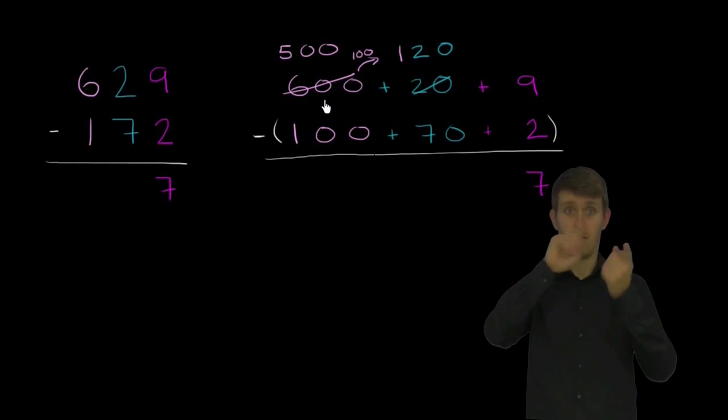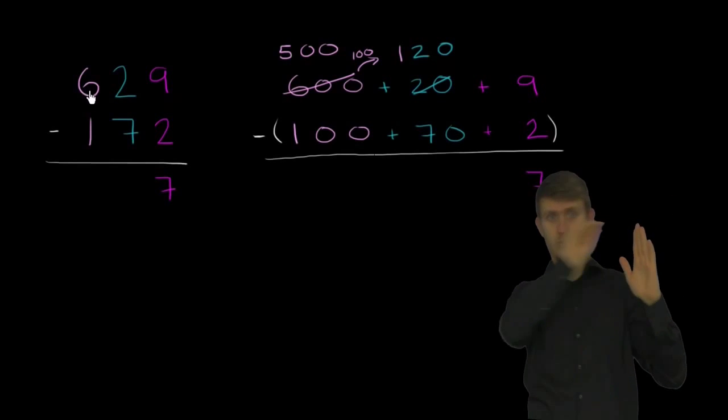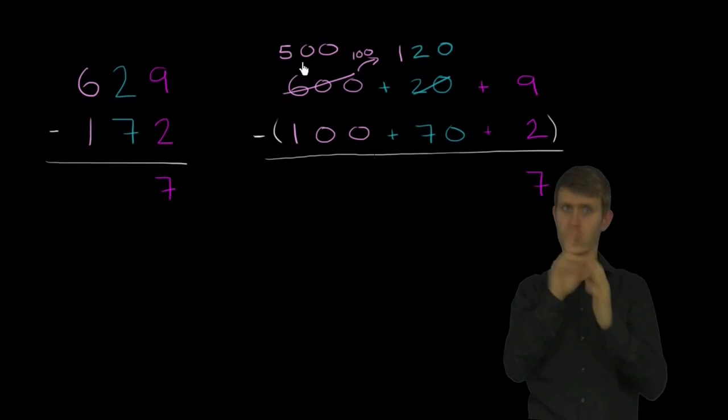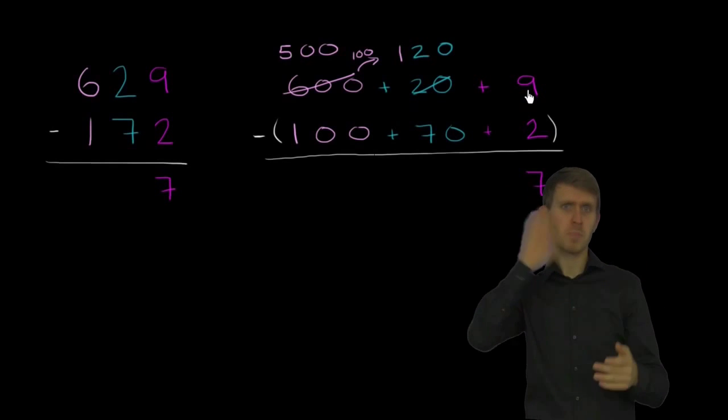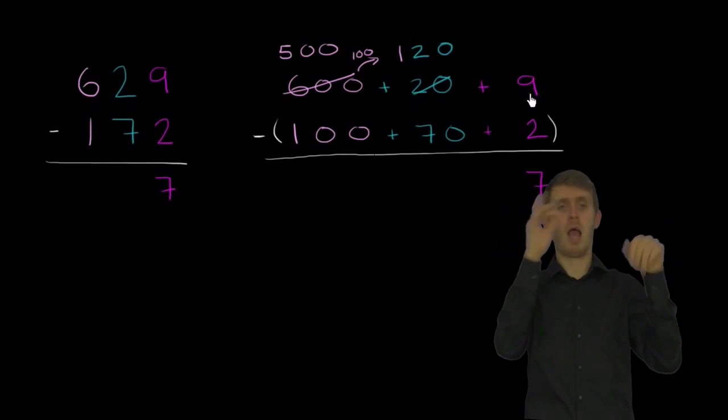So all I did, I didn't change the value of 629. I took 100 from the hundreds place and I gave it to the tens place. Notice, 500 plus 120 plus 9 is still 629. We haven't changed the value.